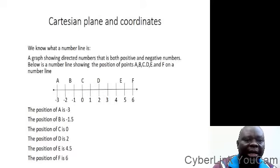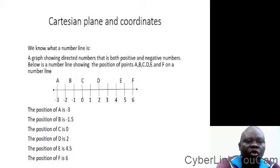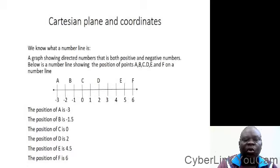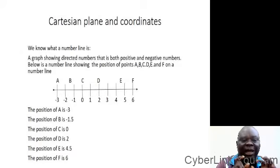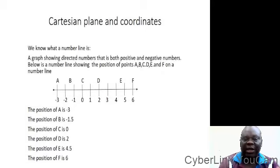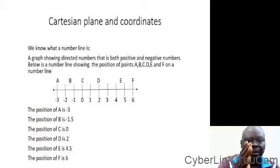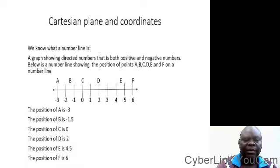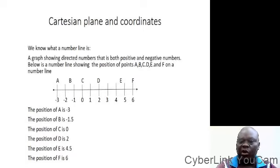What is a number line? A number line is a graph showing the direction of numbers. It is a directed line — it shows directed numbers. From the middle to the left, you have the negative numbers, and from the middle to the right, you have the positive numbers. It shows the position of numbers on a number line. It is a horizontal line.